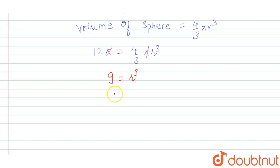That implies r is equal to 9 to the power 1 by 3. 9 can also be written as 3 square. So r is equal to 3 to the power 2 by 3 centimeter.